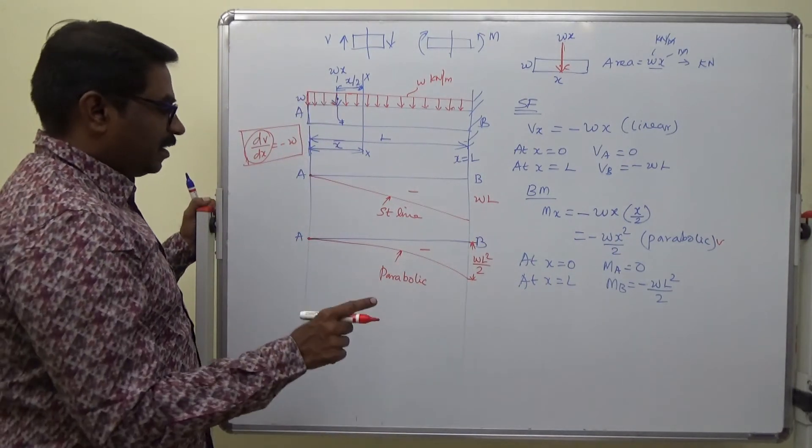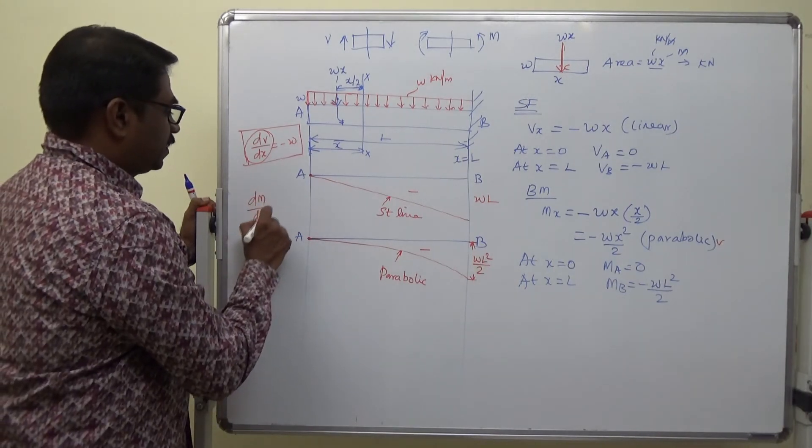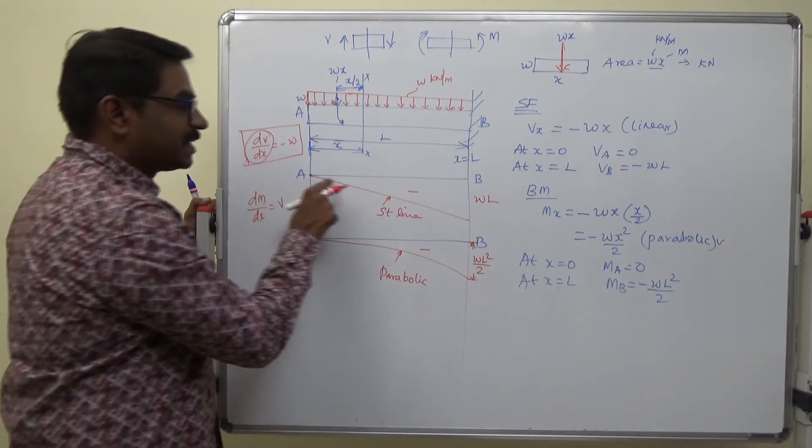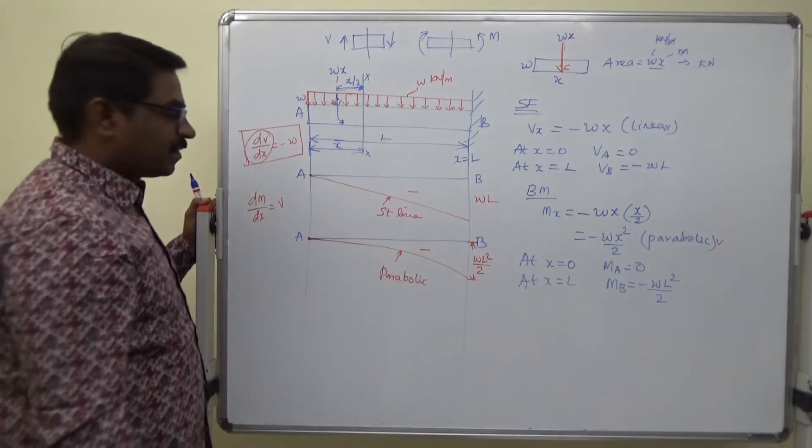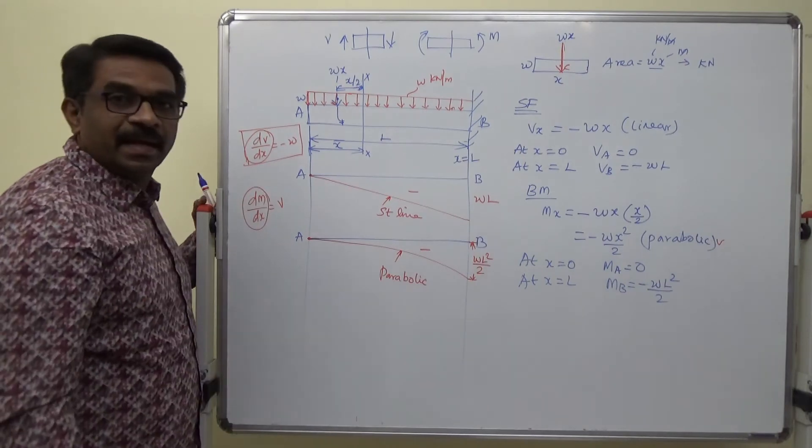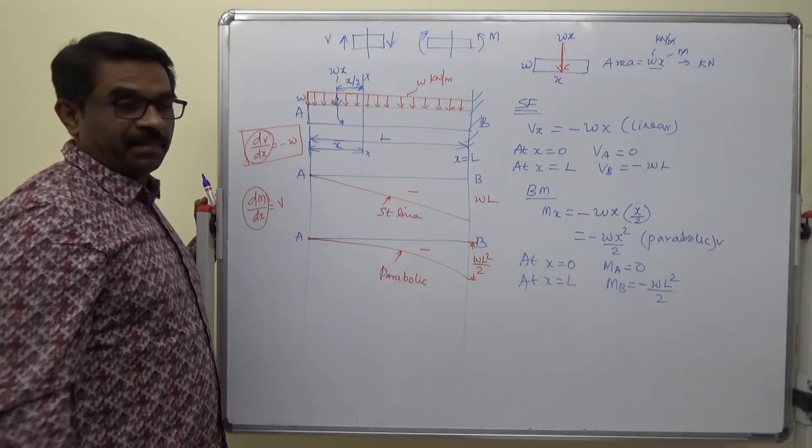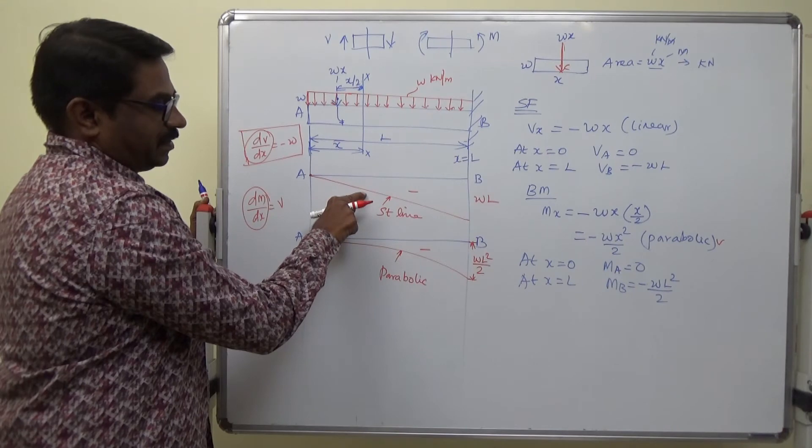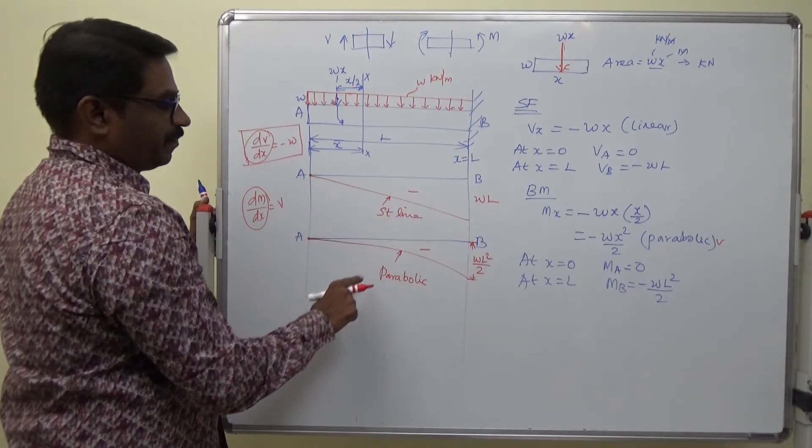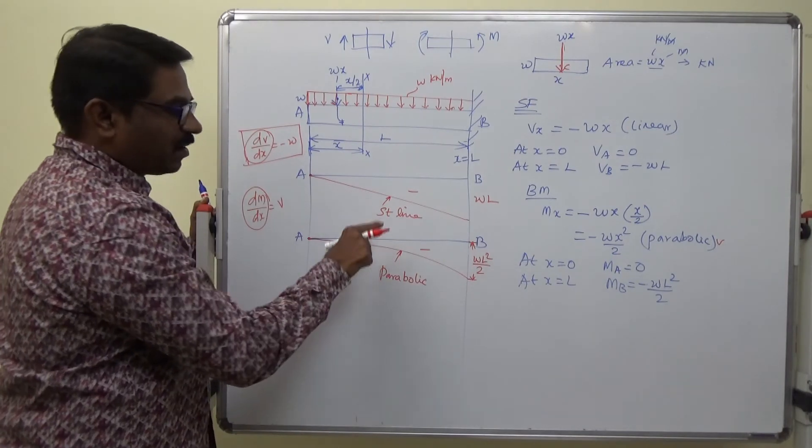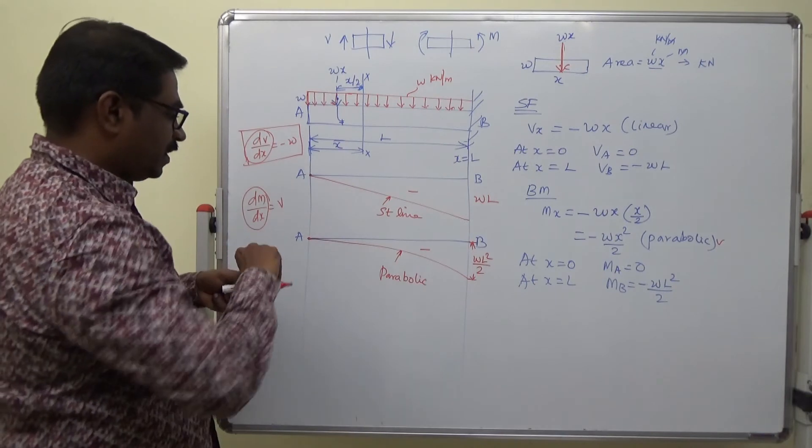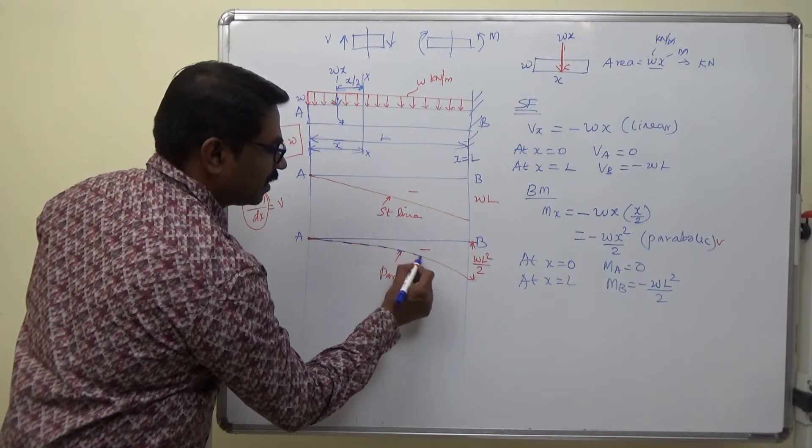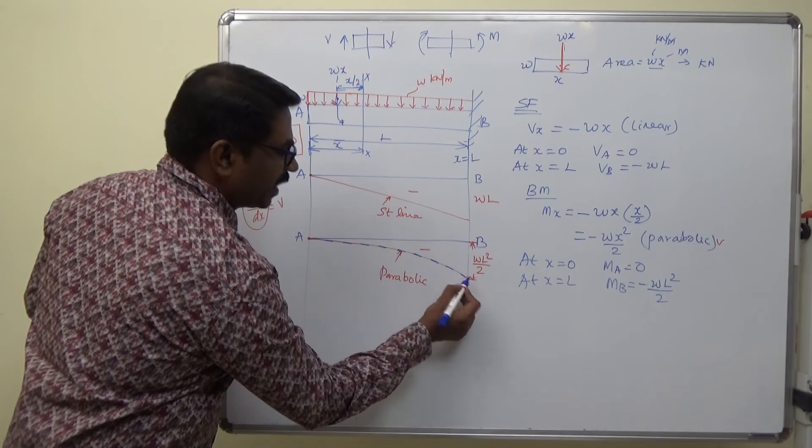See here, dM by dx equal to V. Since V, the shear force value is increasing, the slope will also increase in the bending moment diagram. When you see a straight line here or the value of shear force is increasing, the curve will be parabolic. One order higher and the slope is keep changing. It is not the same slope or constant slope, it is increasing in the negative direction.